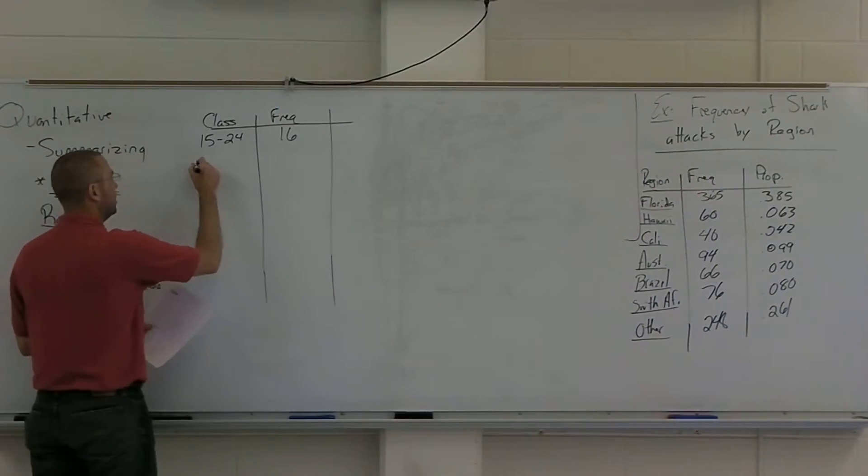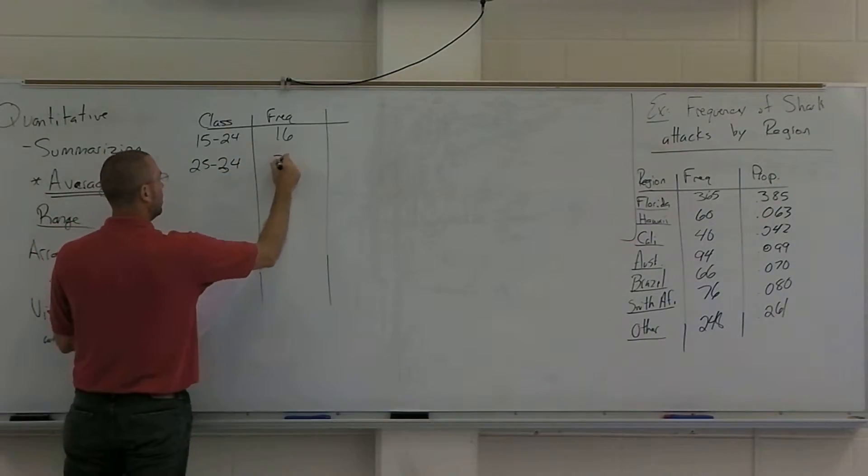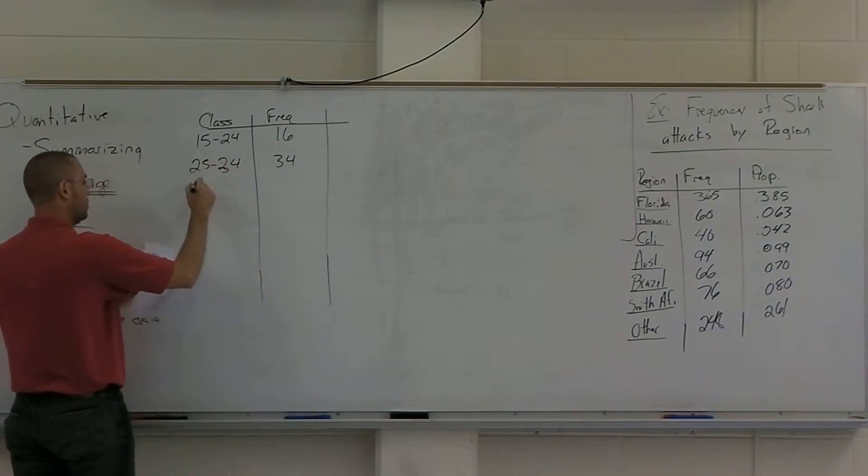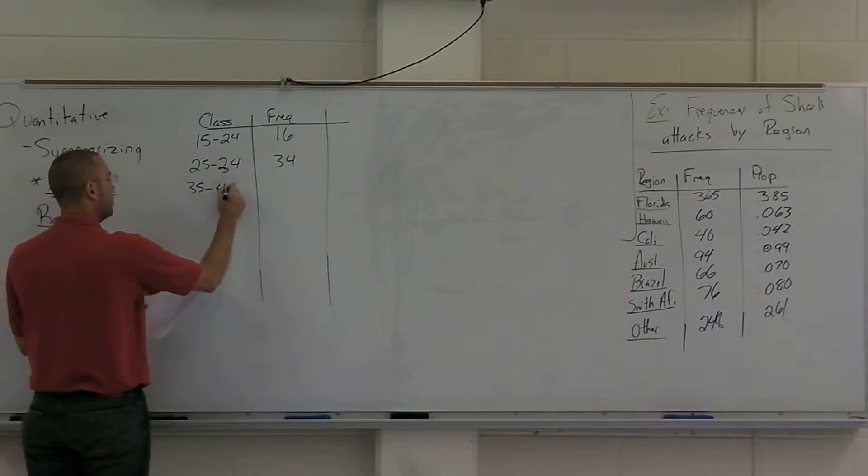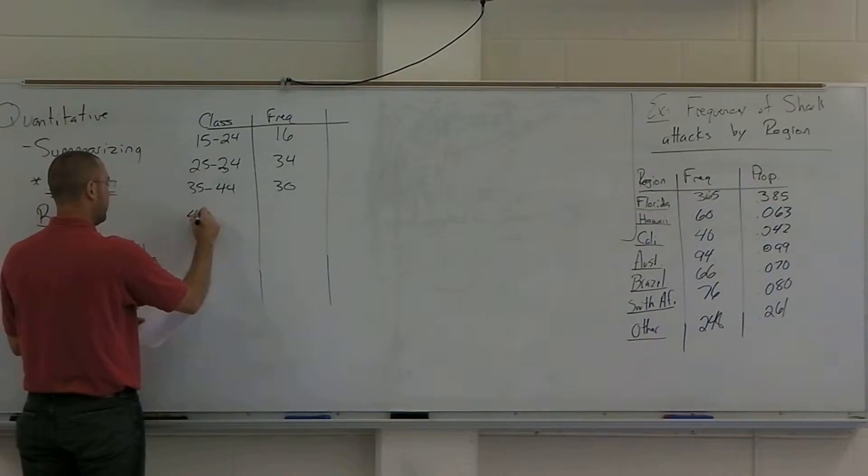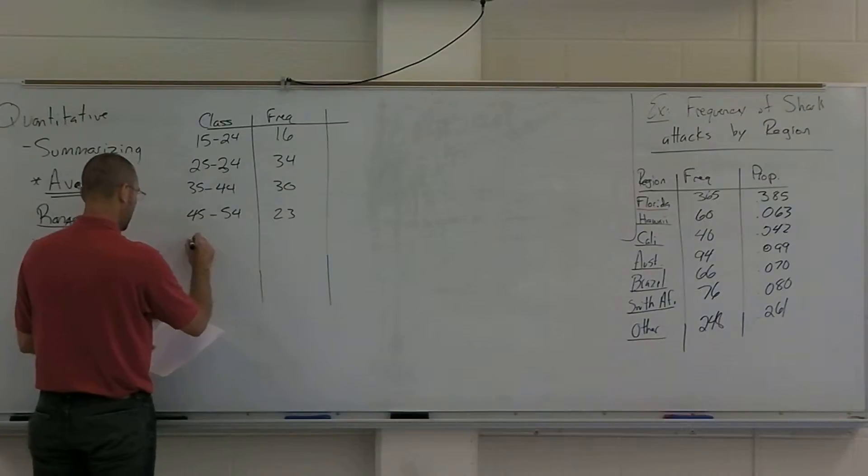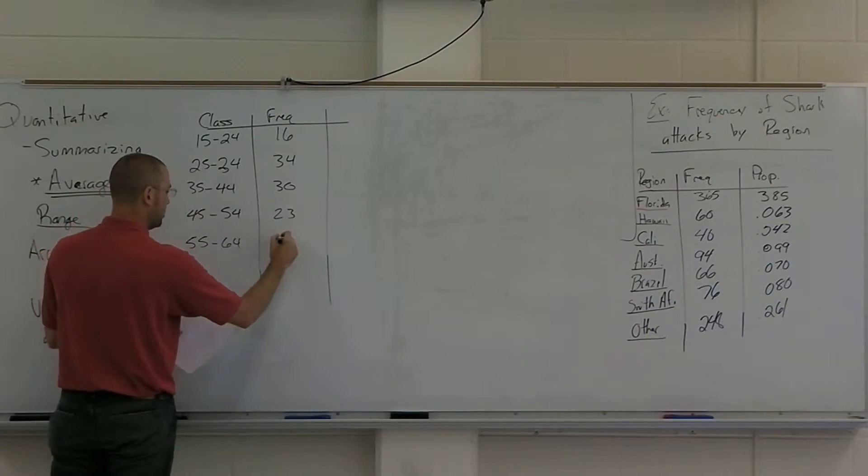From my data there were 16 of those. The second column, the second category between 25 and 34 there were 34. Between 35 and 44 there were 30.